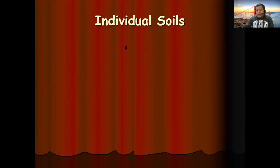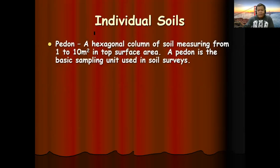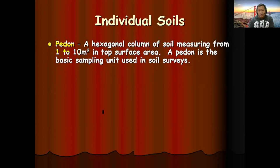What is an individual soil? How do we define individual soils? There are different concepts and terms when studying soils. First, let's look at the pedon. A pedon is a hexagonal column of soil measuring from 1 to 10 square meters in top surface area. It is a unit of classification by which we look at when we classify soils, and it is the basic sampling unit used in soil survey.